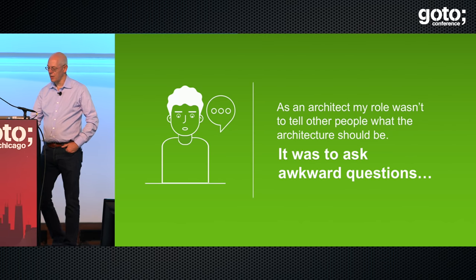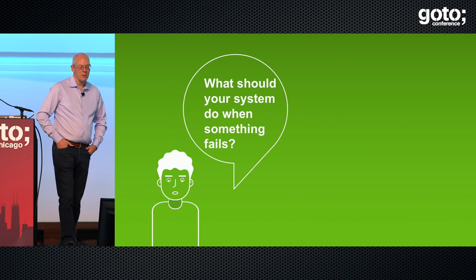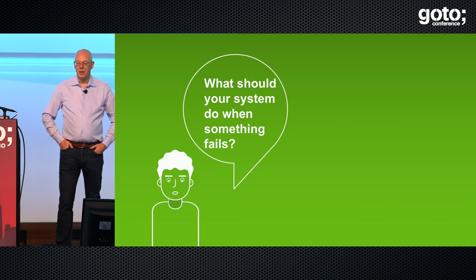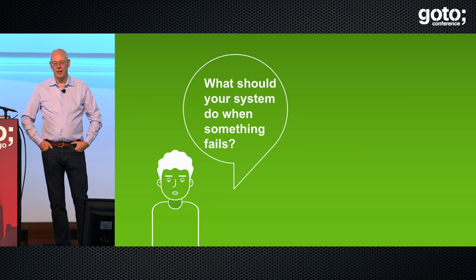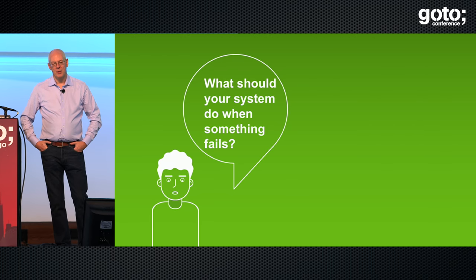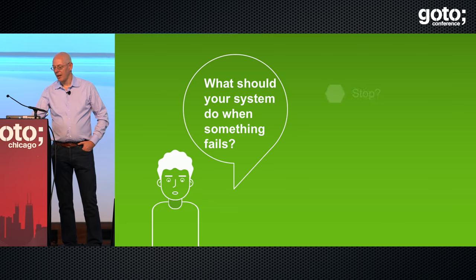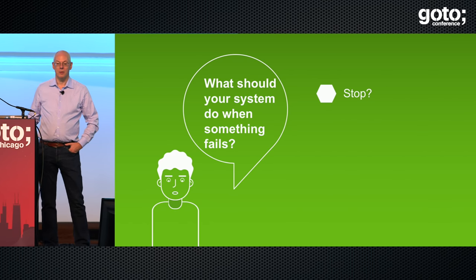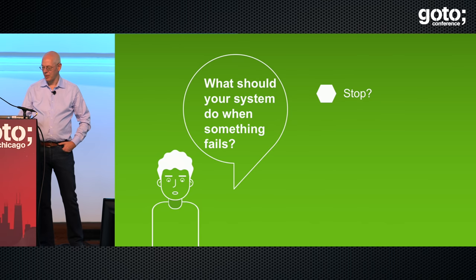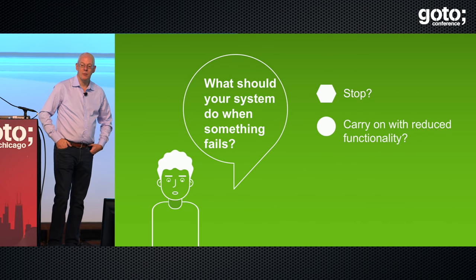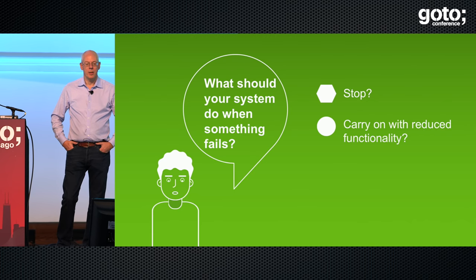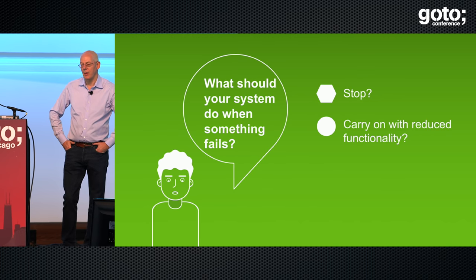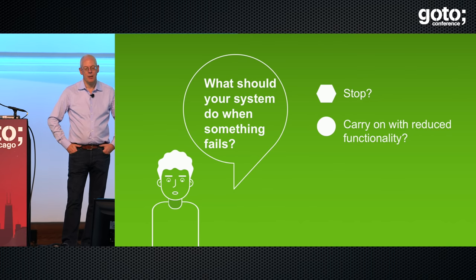I'm going to start off with some questions. Back when I was overall architect at Netflix, my job wasn't to tell people what the architecture should be — it was to ask people awkward questions and get people to ask each other those awkward questions, which helps steer people into good architecture. So here's one: what should your system do when something fails? The usual response is 'I don't want it to fail,' but eventually you admit it's going to have to either stop or carry on with reduced functionality.